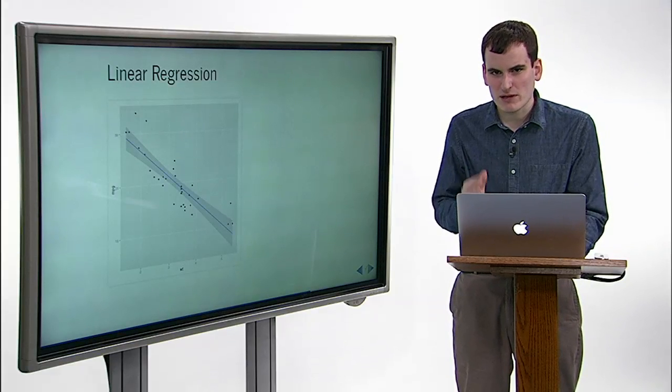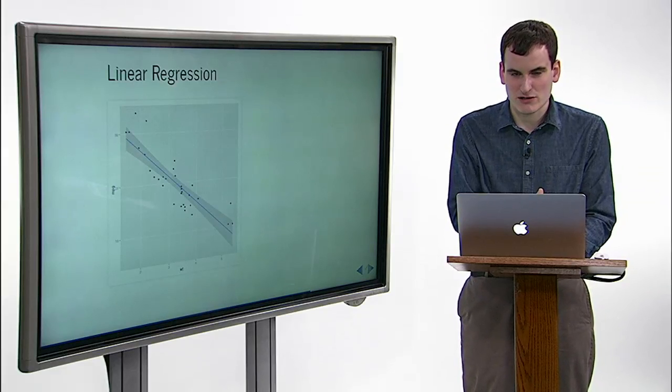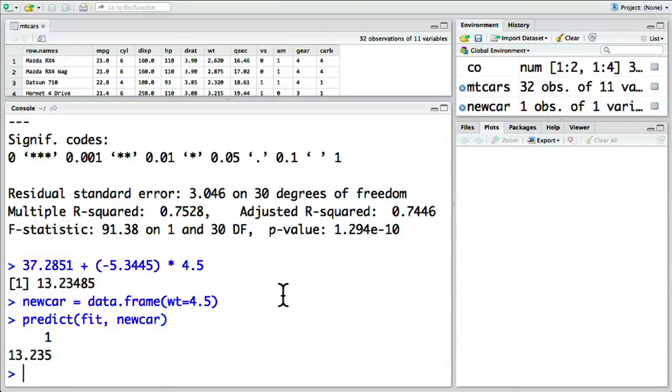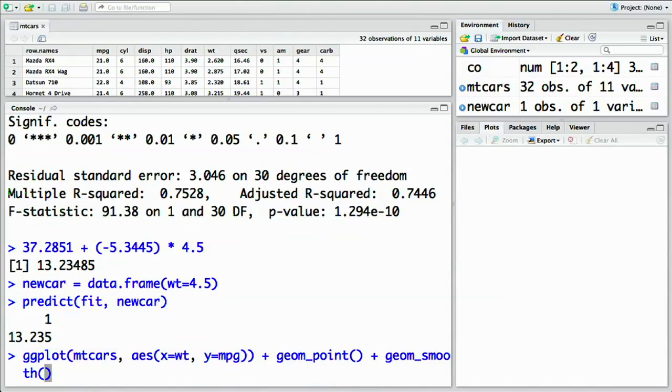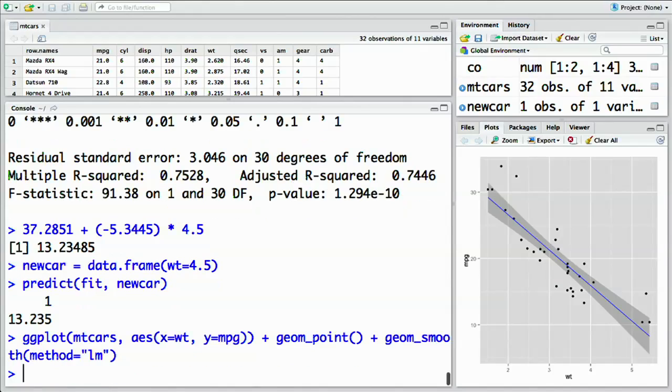Finally, note that we can show a linear model on our plot using a method built into ggplot2, geom_smooth. So when we had our earlier plot, ggplot mtcars, weight was on the x-axis, miles per gallon was on the y-axis. We say it's a scatter plot, geom_point. Now let's add to it the layer of geom_smooth and tell it the method we wish to use is a linear model, the same one we've been learning. Now we get a linear trend on our ggplot.